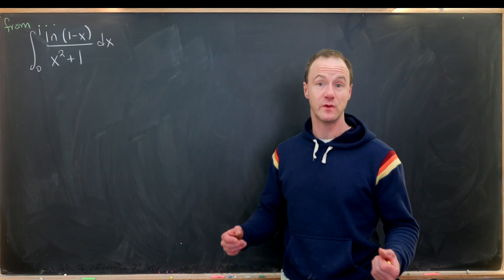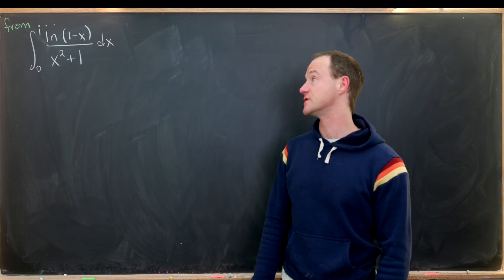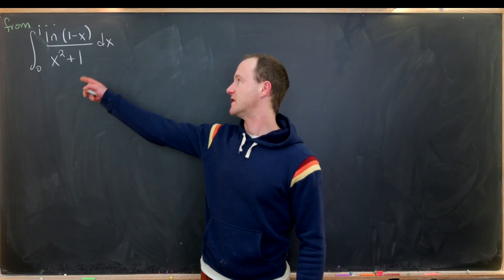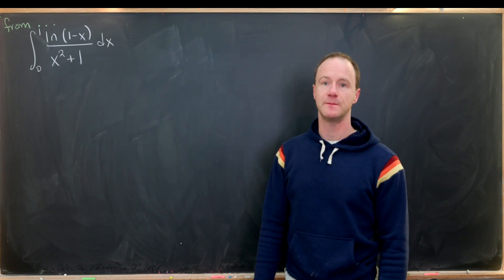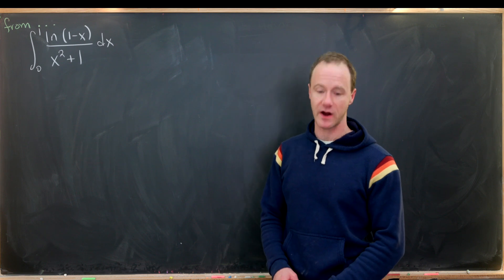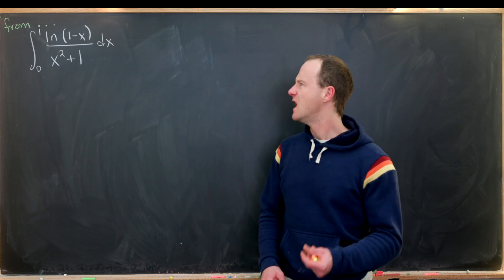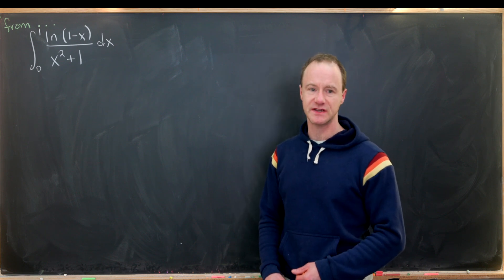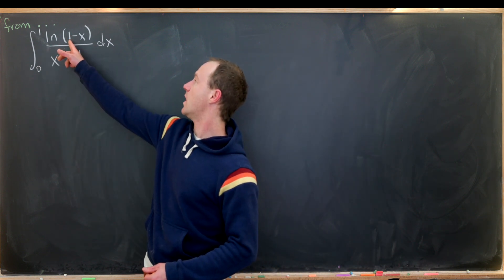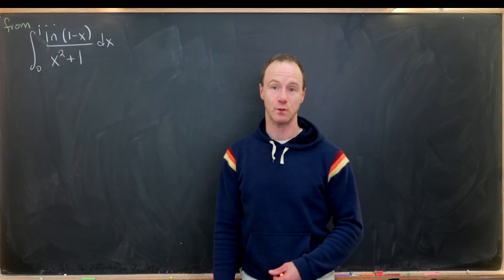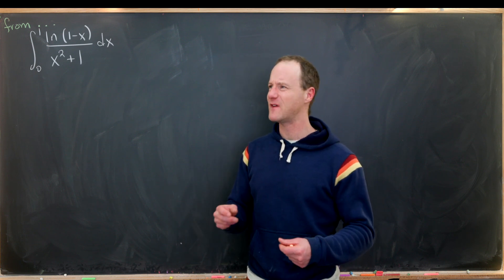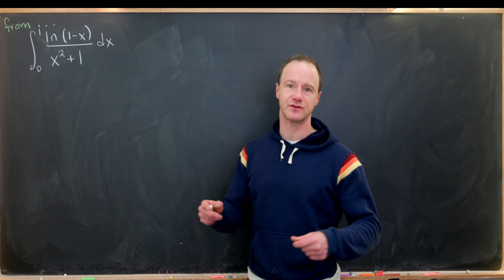Today I've got a nice integral from everyone's favorite internet integral suggester. What we want to do is evaluate the integral from 0 to 1 of the natural log of (1 minus x) over (x squared plus 1). The first way I tried was to rewrite it as the natural log of 1 minus x times y and expand it into a double integral, but I found I was just going around in circles.